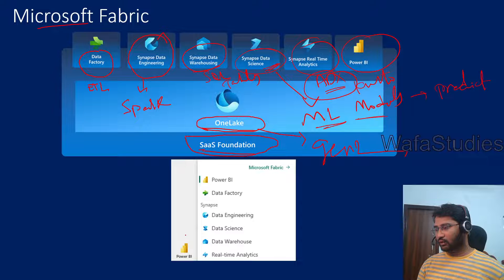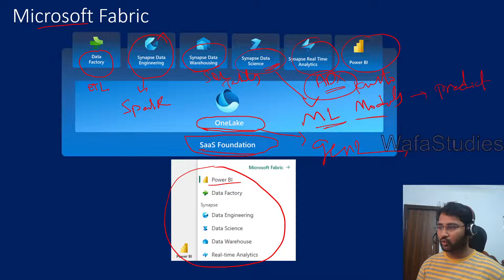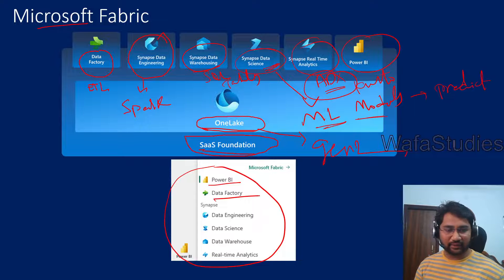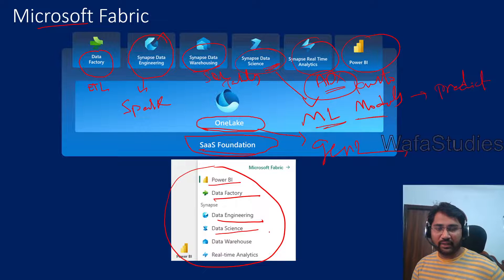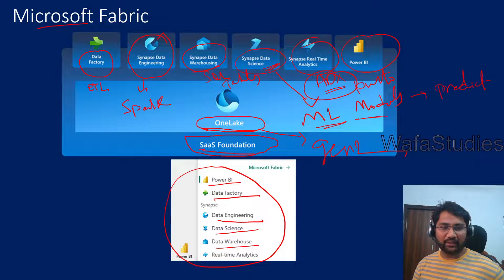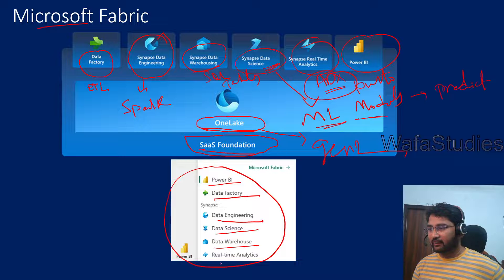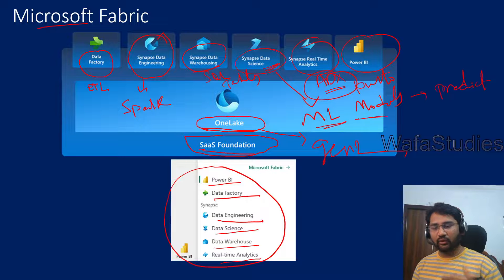Looking at the Microsoft Fabric portal UI: Power BI is available for reporting, Data Factory for ETL pipelines and data integration, Data Engineering for Spark-based transformations, Data Science for creating and training ML models, Data Warehousing similar to Synapse dedicated SQL with data warehouse tables for loading and reporting, and Real-Time Analytics for sensors data using Kusto queries — all available in a single product.